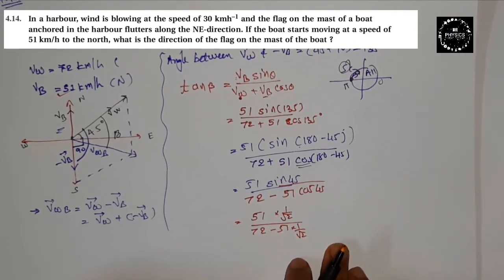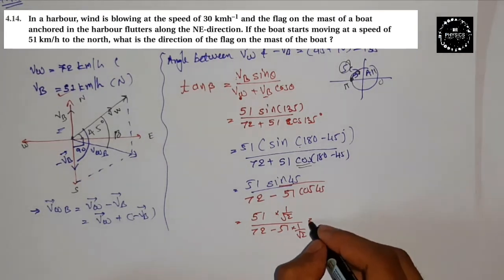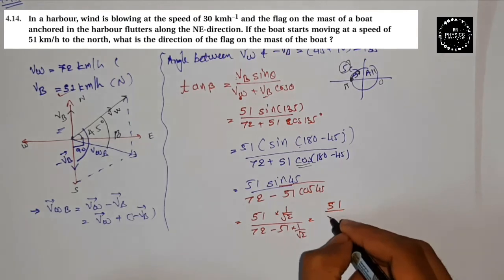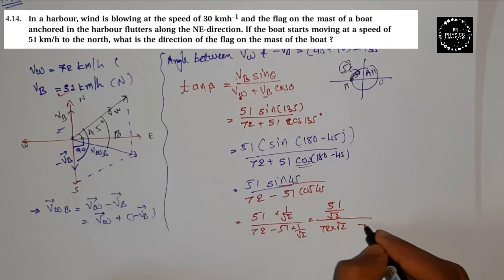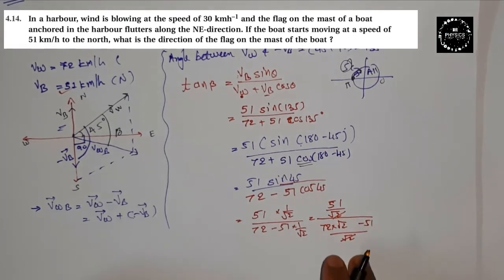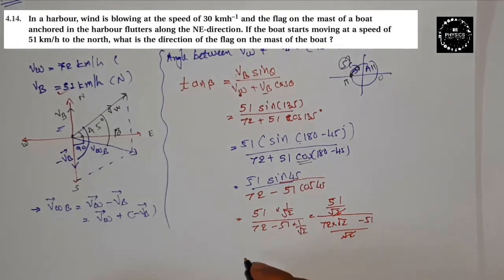Now we can do simple calculation. We can do simple values. 51 divided by root 2. LCM means 72 into root 2 minus 51 divided by root 2. Root 2 root 2 cancel out. So here we can do simple calculation. 51, 72 root 2 means 1.41 minus 51.